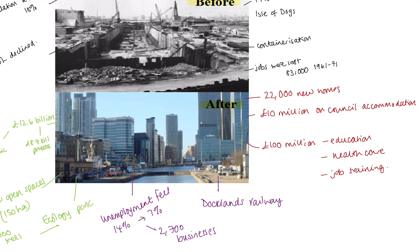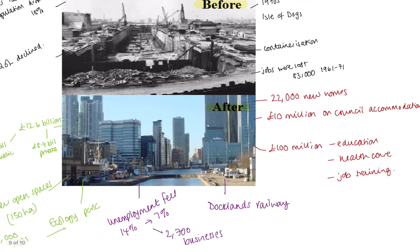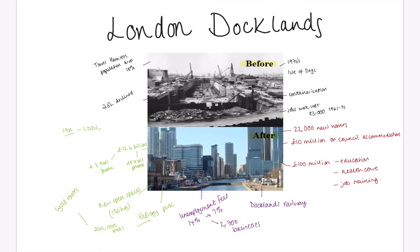Those are the key successes and benefits. But we want to consider whether there are any drawbacks. Are there any people who aren't better off because of this? What happened to the original people that lived there — can they afford these new house prices? But then you might argue they now have access to all of these things they didn't have before. Weigh that up as part of your revision because that's what you'll be asked to do in the nine-mark questions. I hope this video has been helpful as a starting point with your revision about London Docklands.